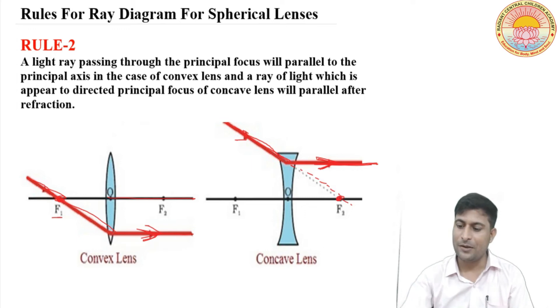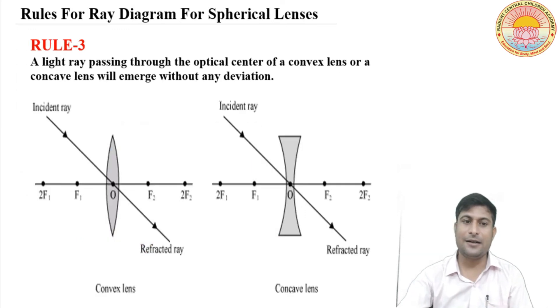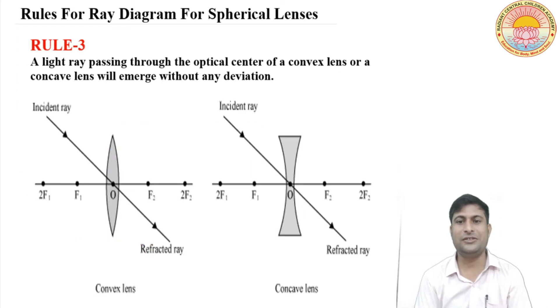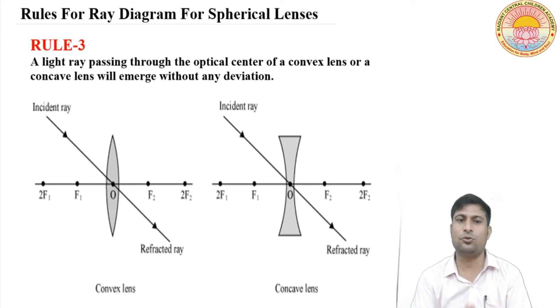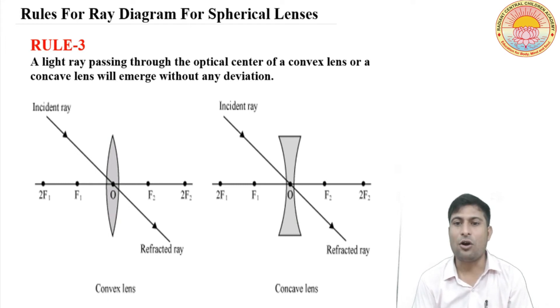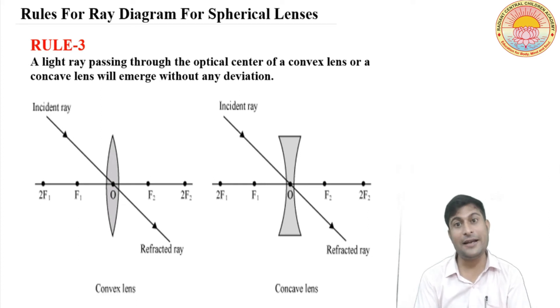Okay, these two rules. Third and last rule: a light ray passing through the optical center of a convex lens or concave lens will emerge without any deviation.